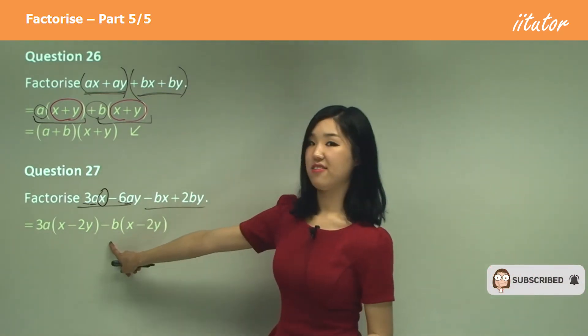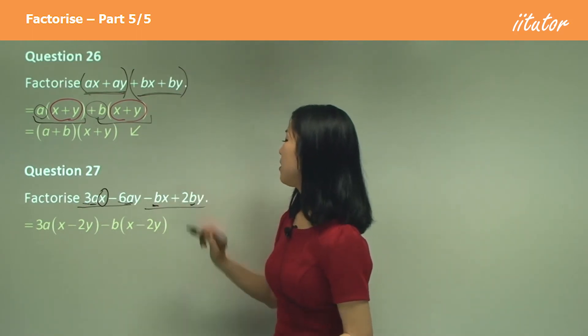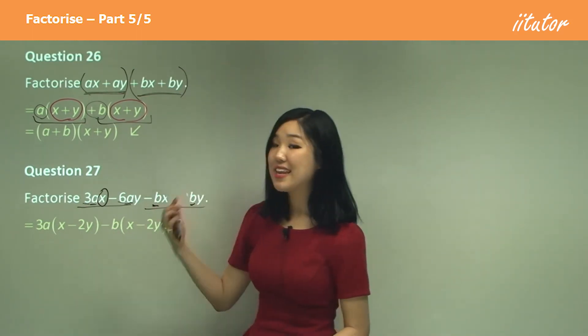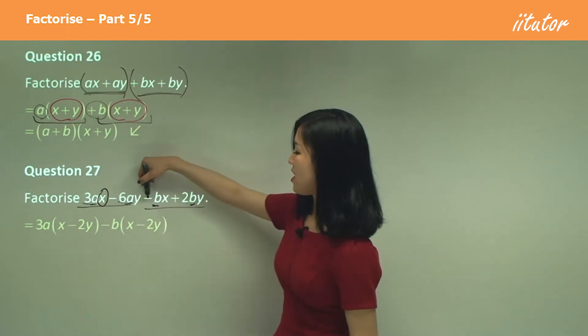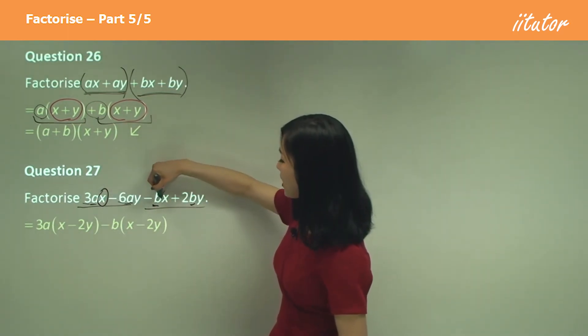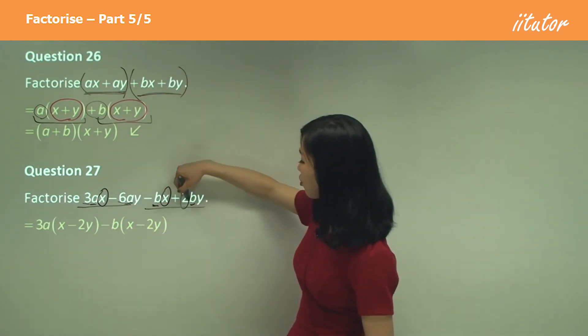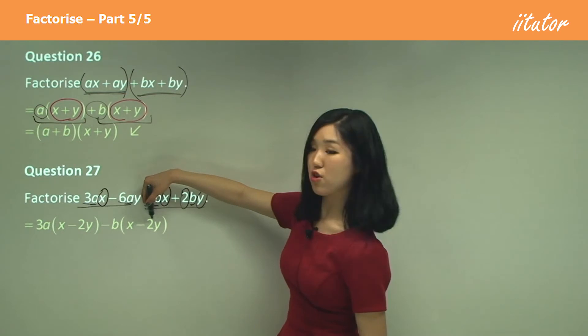And here, I actually put the answer there already. But b is common. See how b is common? So I took b out. I'm going to take negative b out, because I don't want the negative there. So take negative b out. So here, I'll just have x left over. And here, I'll have two y left over.